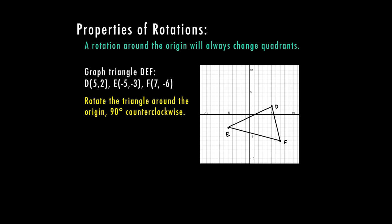So this time I'm going to rotate the triangle around the origin 90 degrees counterclockwise. So 90 degrees counterclockwise means I'm going to be rotating it to the left. So all three of my points are going to end up in three new quadrants. So D is going to end up in quadrant two, F is going to end up in quadrant one, and E is going to end up in quadrant four. So let's go ahead and rotate these to their new position.